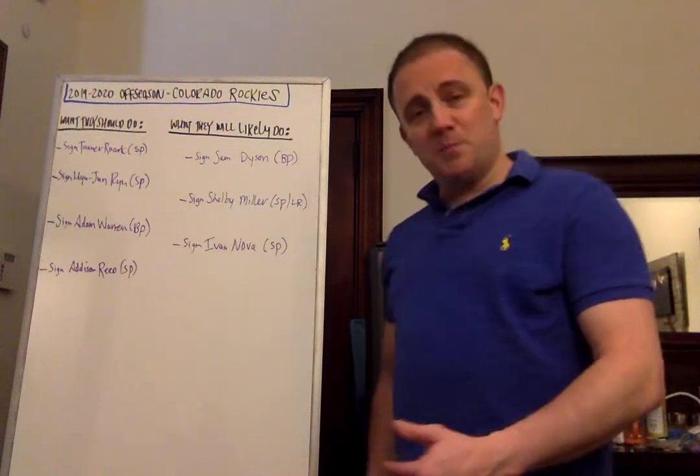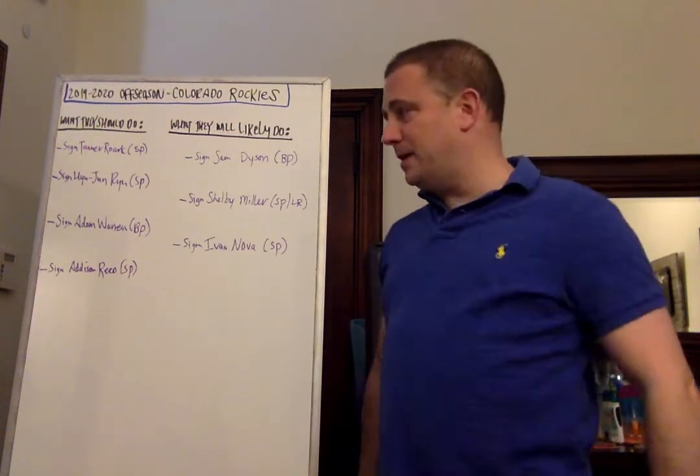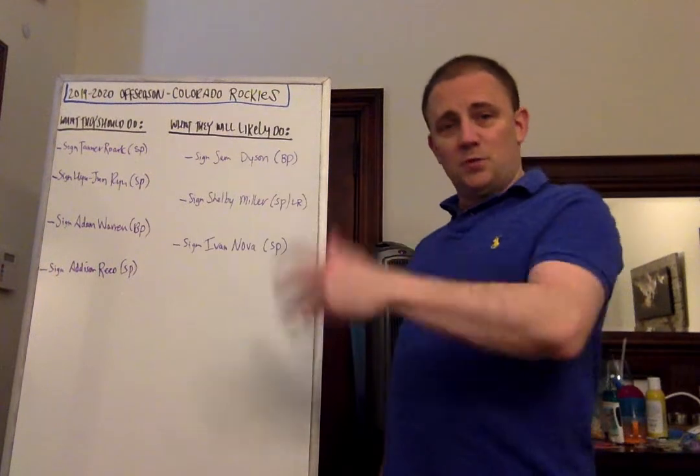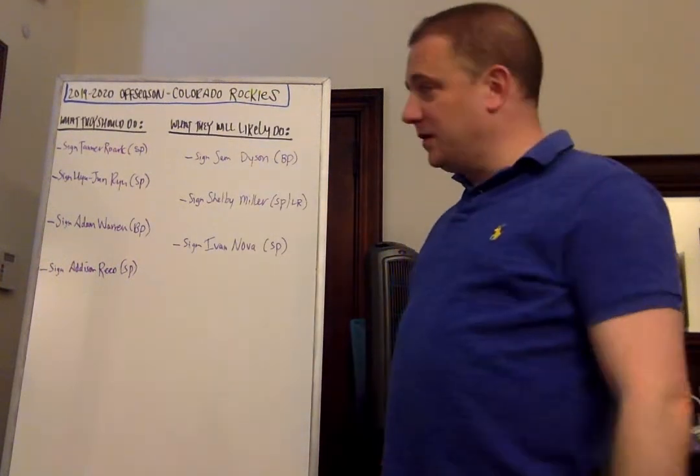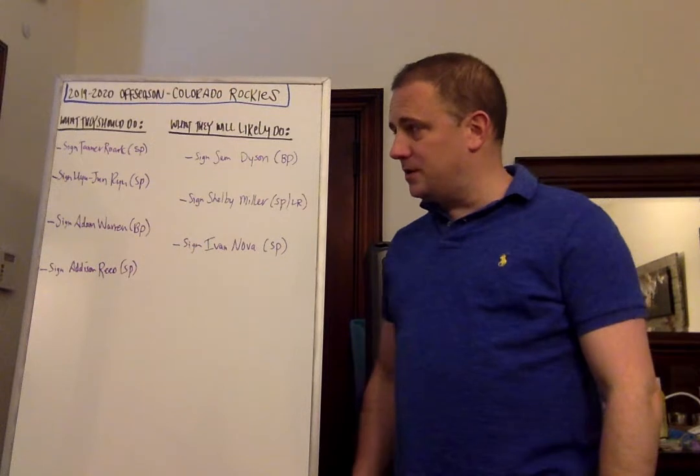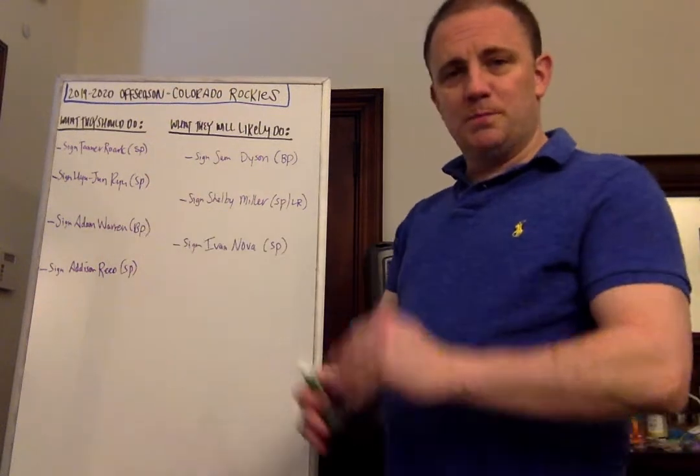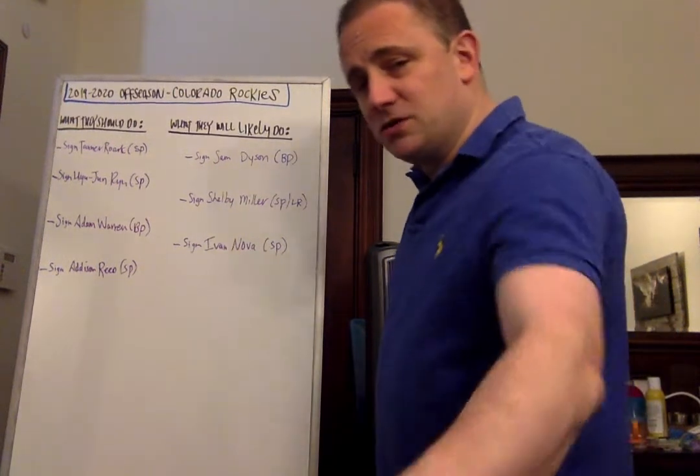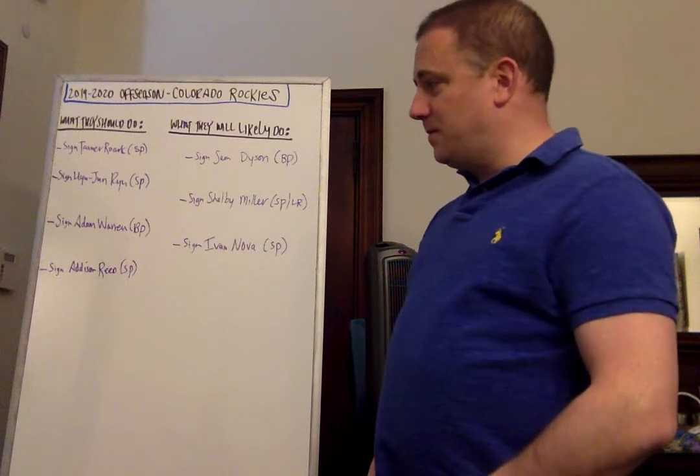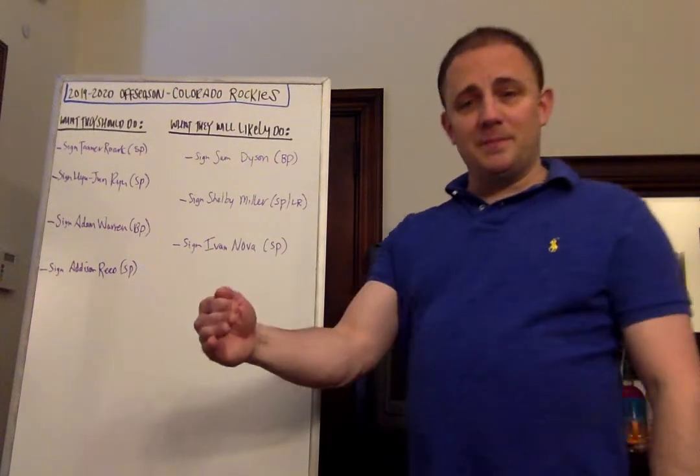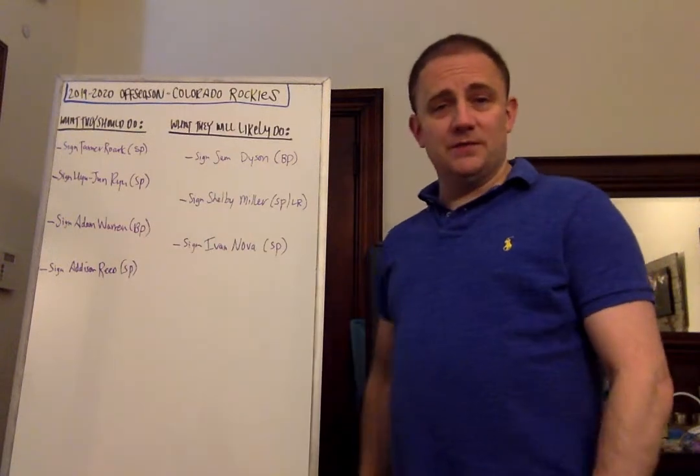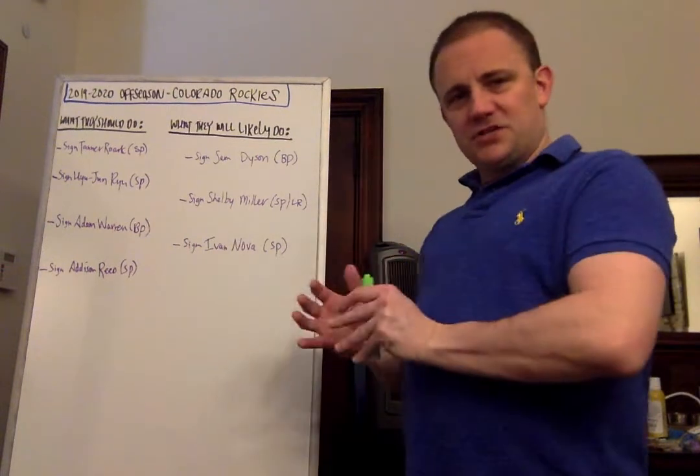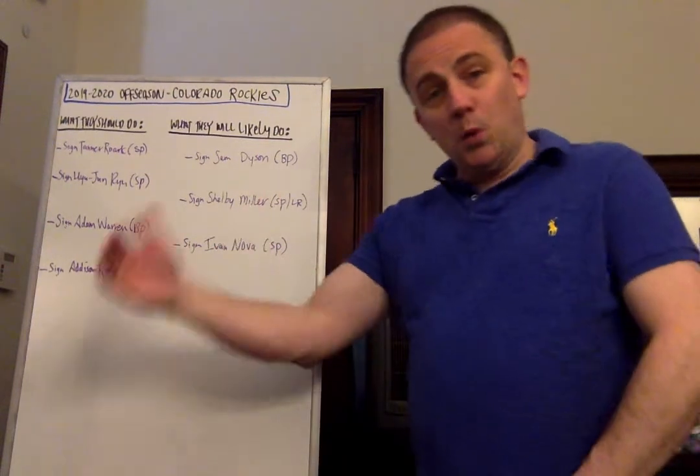What I also think they should do is sign Adam Warren for the bullpen, a good veteran presence in the bullpen who's also good at inducing ground balls. And as we know, fly balls can turn into home runs, and home runs can turn into orbits to Jupiter at Coors Field because of the high altitude and the thin air. I think some of these pitchers would bode well, which would also help reduce some of the pressure off Jon Gray and some of your other pitchers. So Adam Warren would be a nice fit for the bullpen, and so would Addison Reed, another bullpen piece.